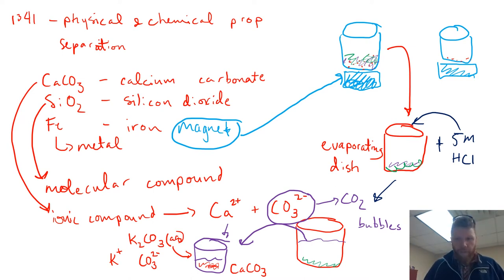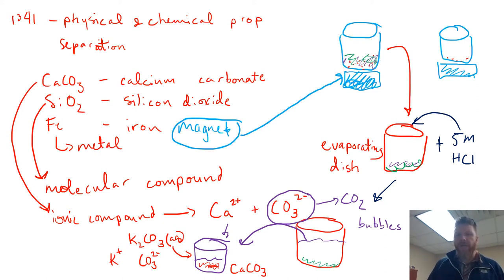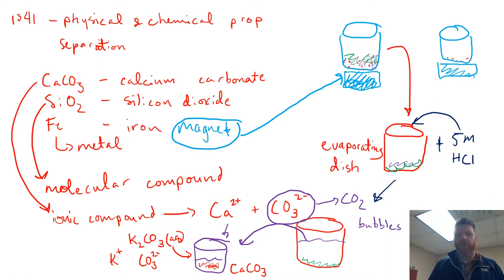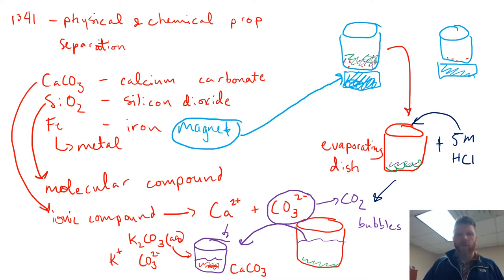You'll need to get the mass at the very beginning of the lab — what is the mass of your unknown — then go through each one of these steps and find the mass of each subsequent component. What is the mass of the iron by itself? Then dry up the silicon dioxide in the oven in the evaporating dish for at least 15 to 20 minutes — what is the mass of just that silicon dioxide?